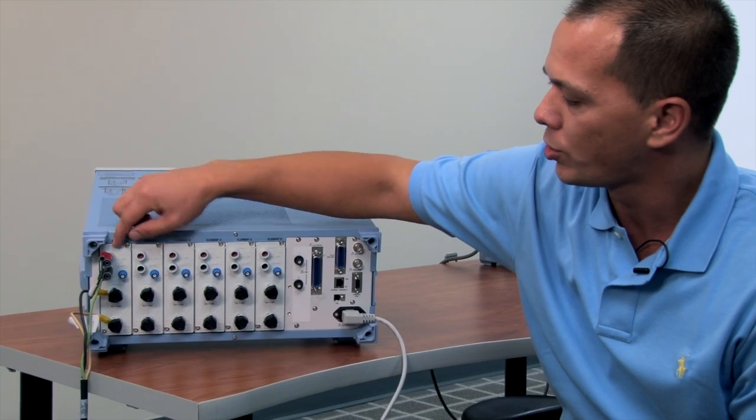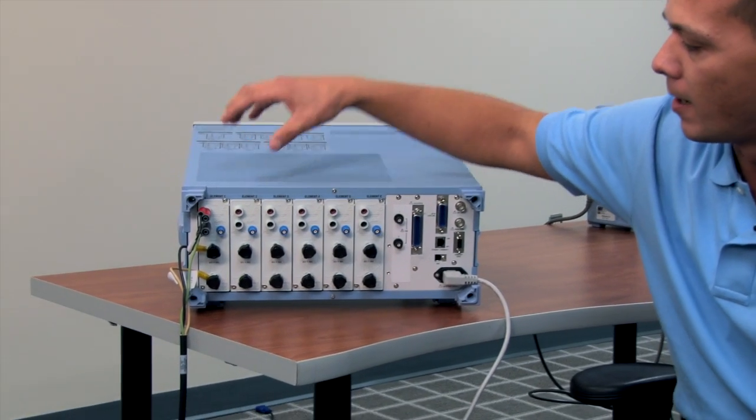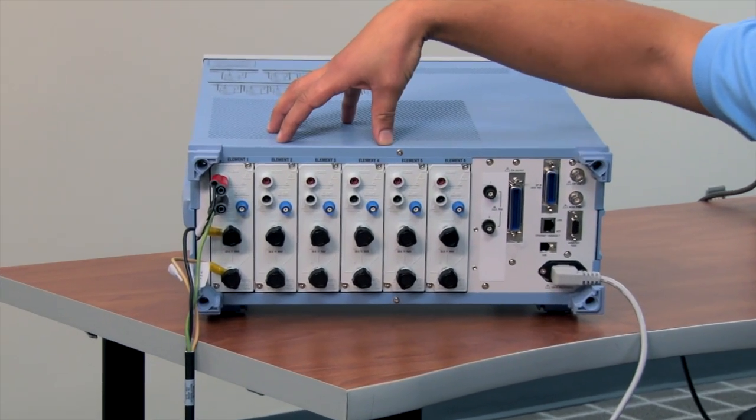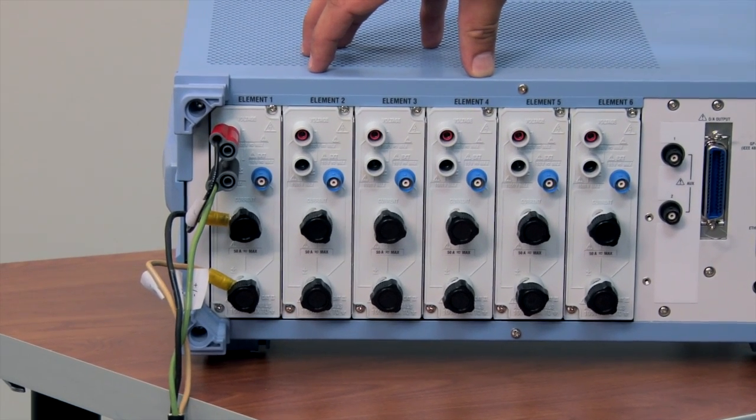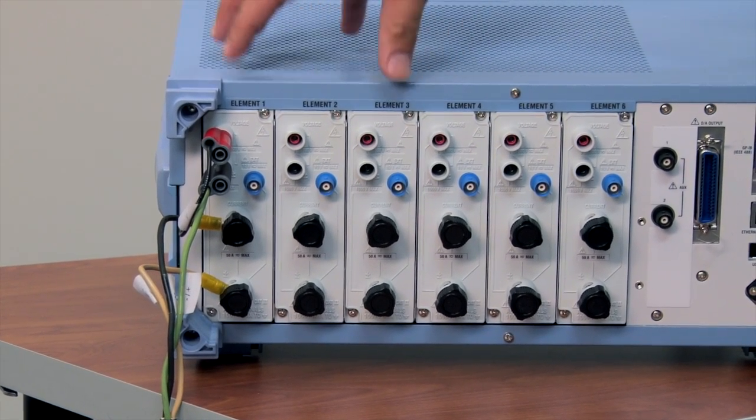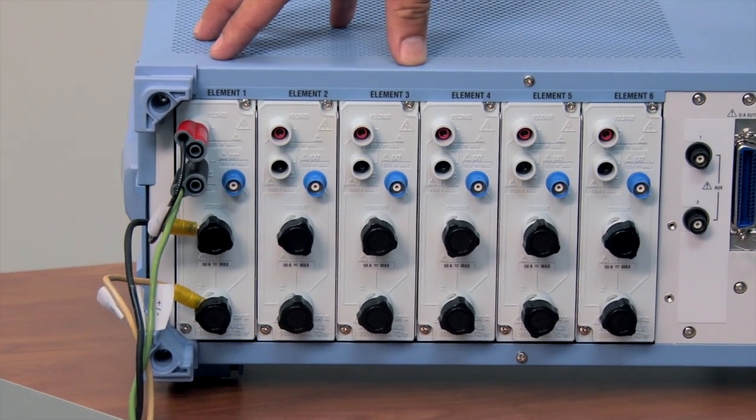We have direct voltage and current inputs. There's two input elements to choose from, one with a 5 amp maximum and one with a 50 amp maximum, both rated at 1 megahertz frequency.